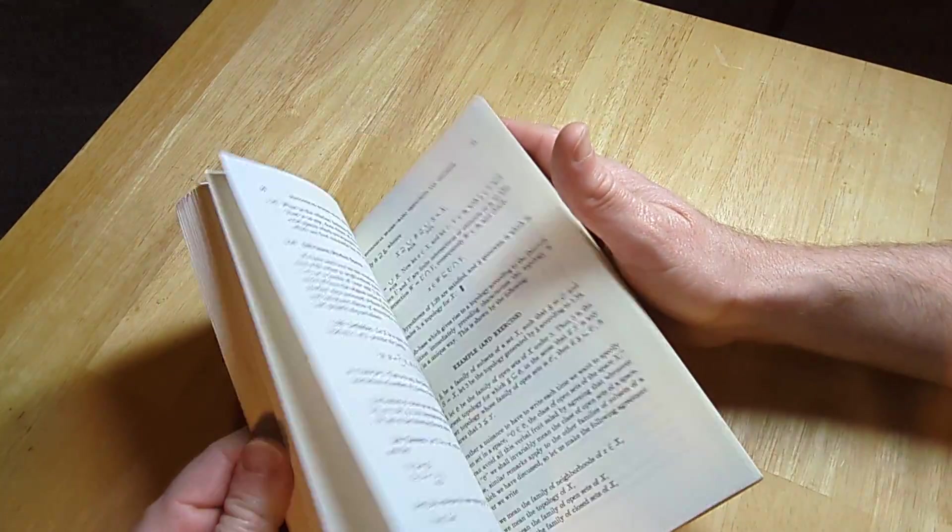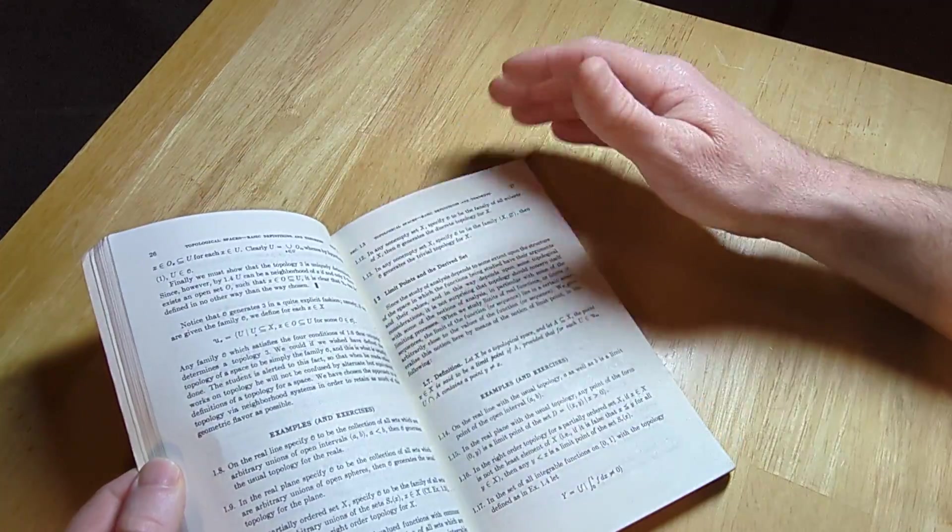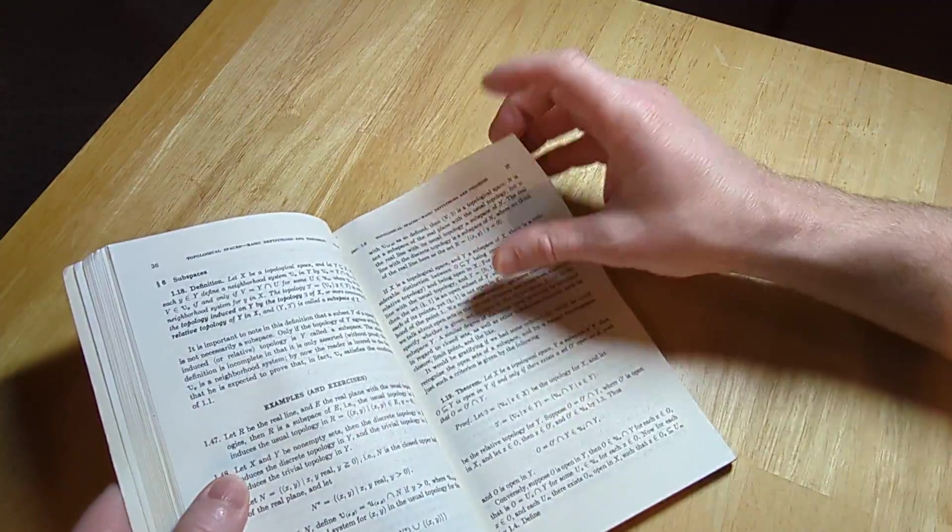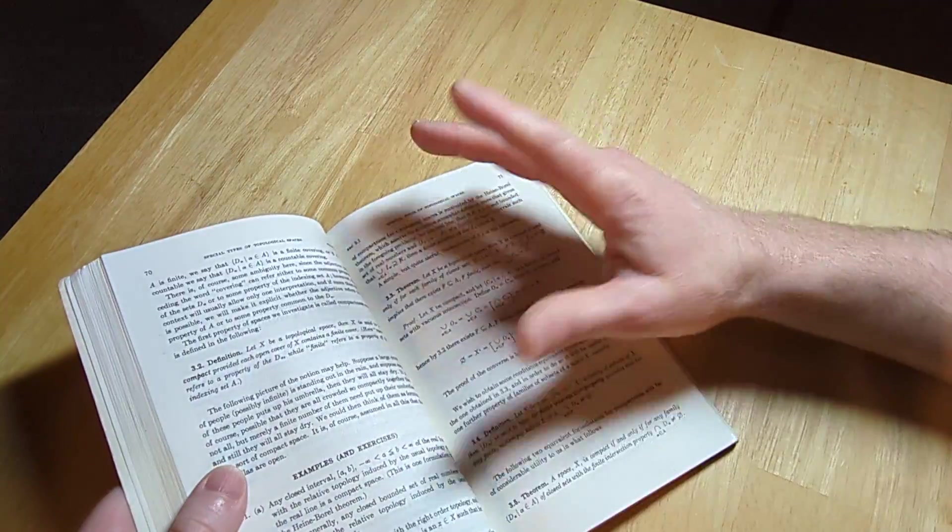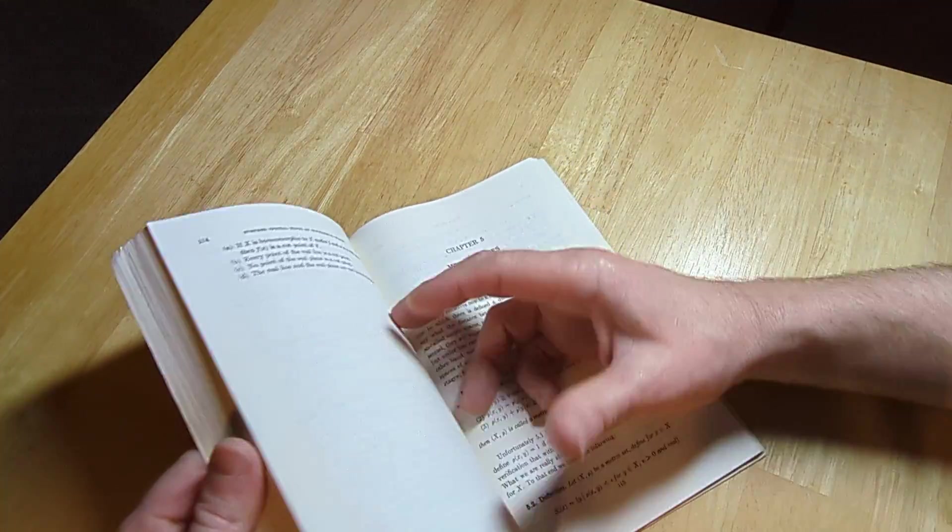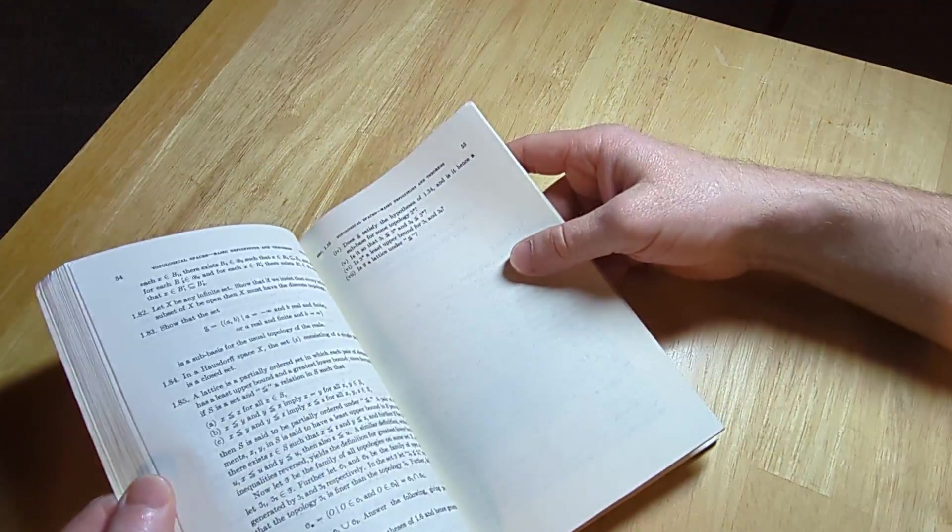I overcame it. Later on, the author gives the regular definition and proves it. They show that you have equivalent definitions of a topology that you can use, and this book just chose to use the one that uses neighborhood systems. There's more than one way to define things.